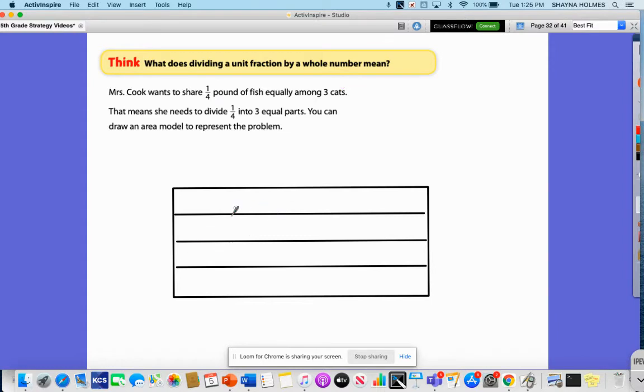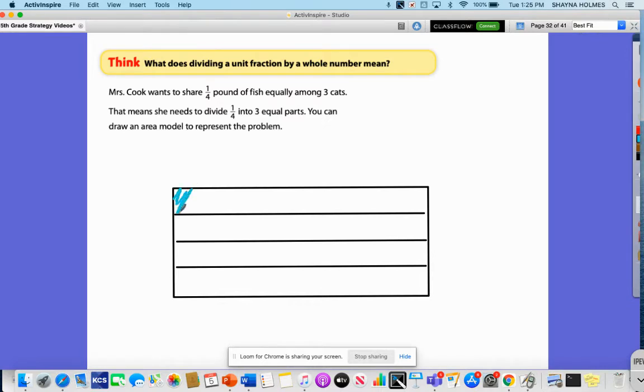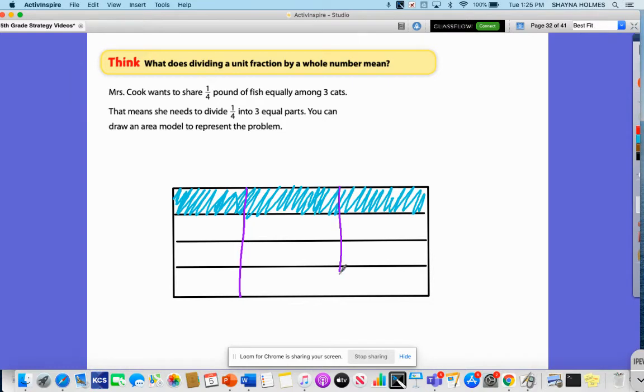Here I have already started my model. This is the 1/4 - this is the fourth pound of fish that the cats are going to share equally. If I have three cats here, I'm going to divide this into three sections as equally as I can. So this would be cat one, cat two, and cat three.